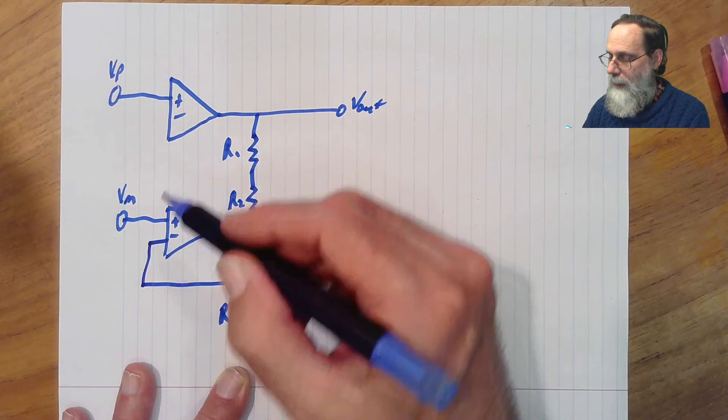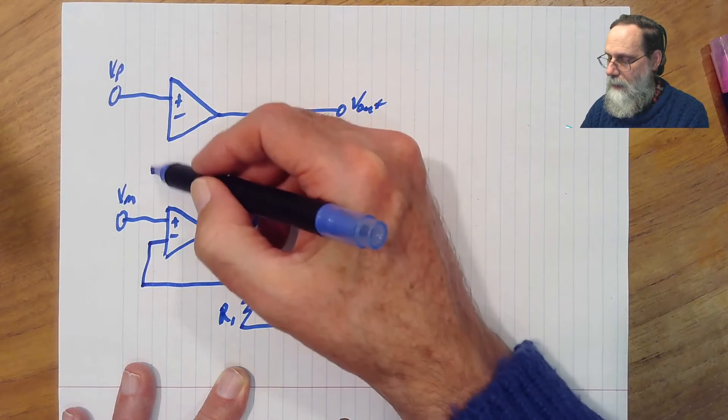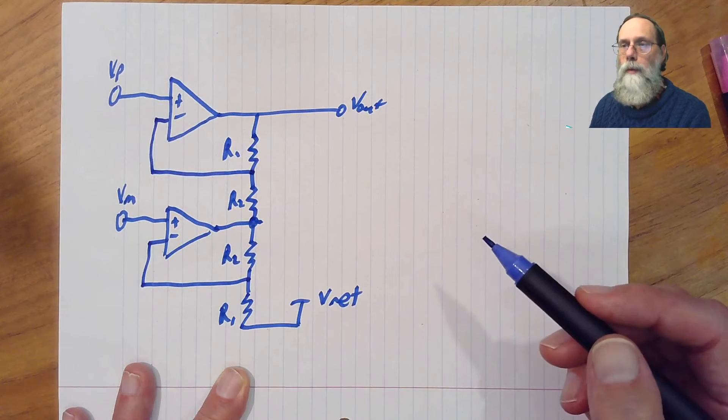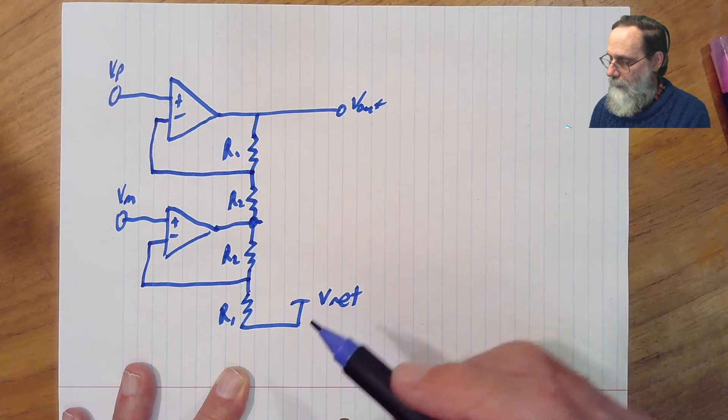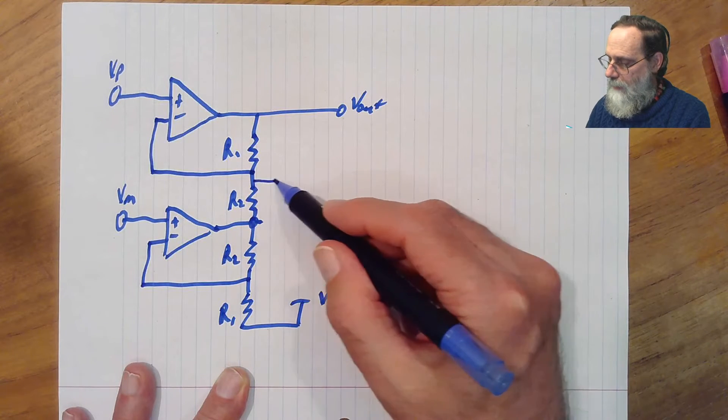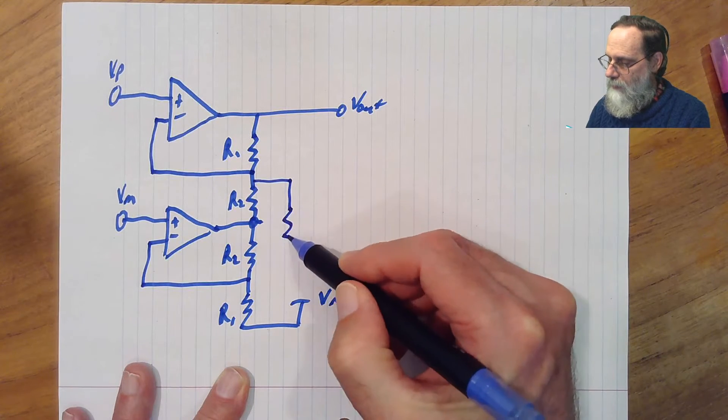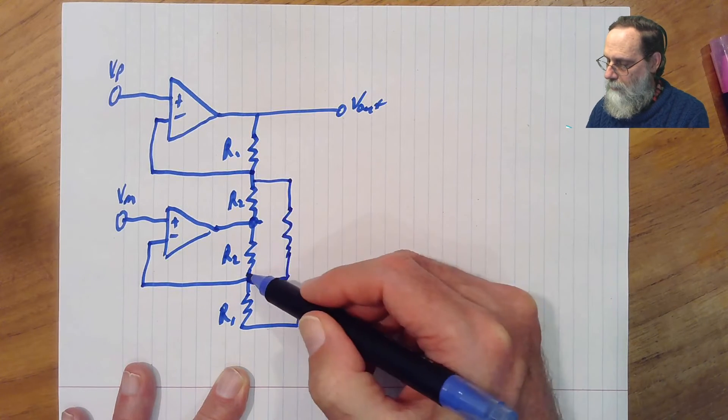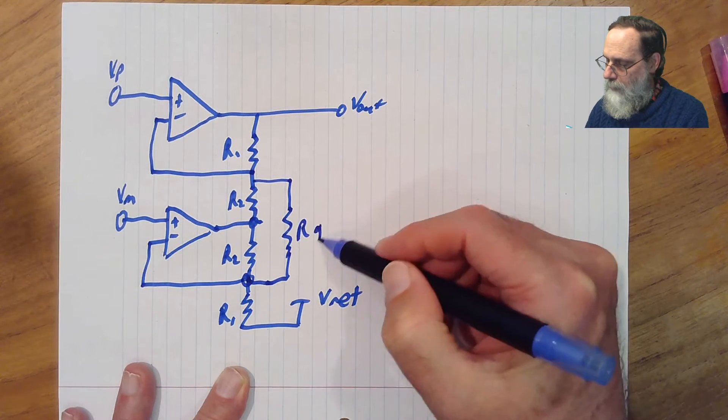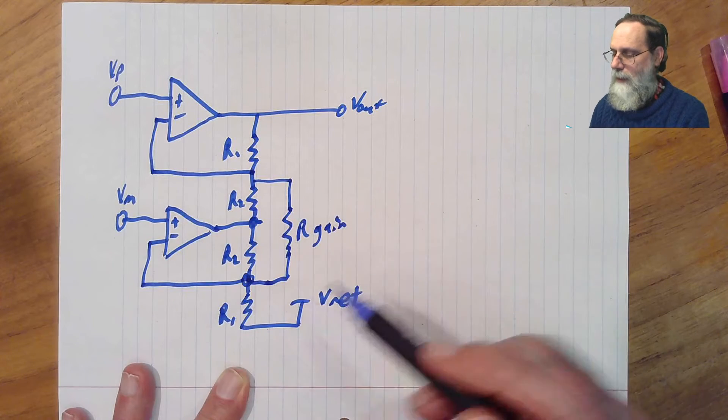And now we're going to provide the feedback. And there's one more thing we're going to do here, and that is to add a gain resistor connecting the two negative inputs.